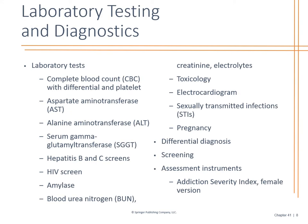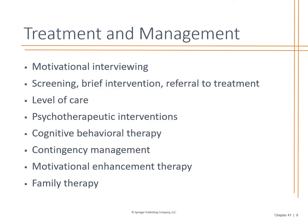We look at lab values to rule out any metabolic cause, doing all the screenings and making sure we're not missing anything that could be causing this abuse. We use screening tools such as the addiction severity index — there is a female version. For treatment and management, motivational interviewing is key. We want to be cheerleaders for them. Come up with a plan together — you don't dictate it to them, they need to be actively involved. Look at cognitive behavioral therapy. Think outside the box; it's not always pharmaceutical.